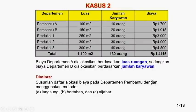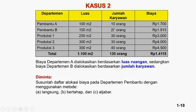Kita masuk ke kasus kedua: bagaimana mengalokasikan biaya yang ada di service department ke departemen produksi menggunakan 3 metode. Datanya: pembantu A, pembantu B, produksi 1, produksi 2, produksi 3. Luas ruangan: A=100m², B=150m², produksi 1=250m², produksi 2=300m², produksi 3=300m², total=1.100m². Jumlah karyawan: A=10, B=20, produksi 1=30, produksi 2=30, produksi 3=40, total=130 orang.